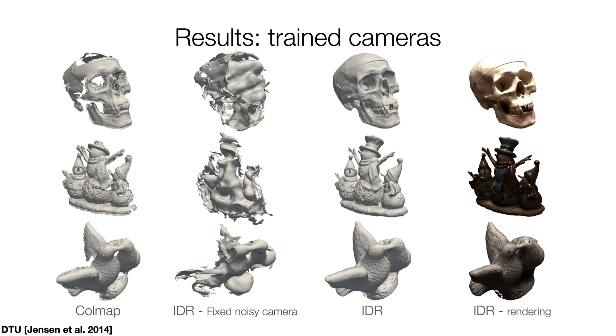Here are results in the setup of trainable cameras with noisy initializations. We show our surface reconstruction compared to the popular non-deep learning approach COLMAP. We further show results of IDR training with fixed cameras set to the inaccurate camera initializations. This indicates that the optimization of camera parameters together with the 3D reconstruction is indeed significant.